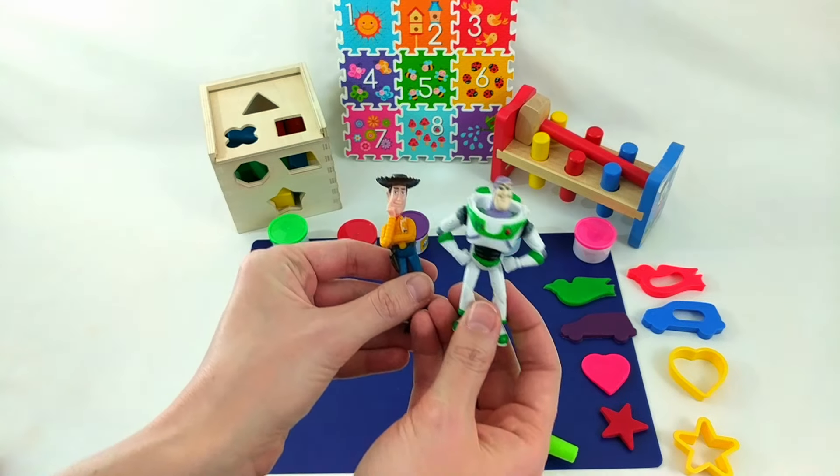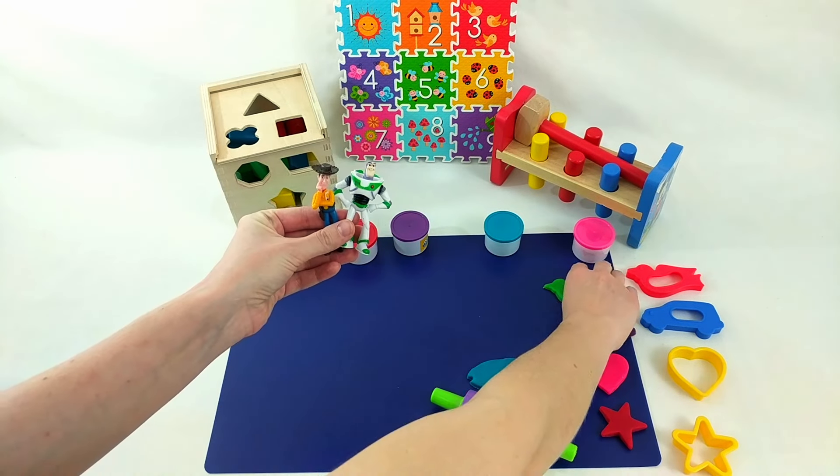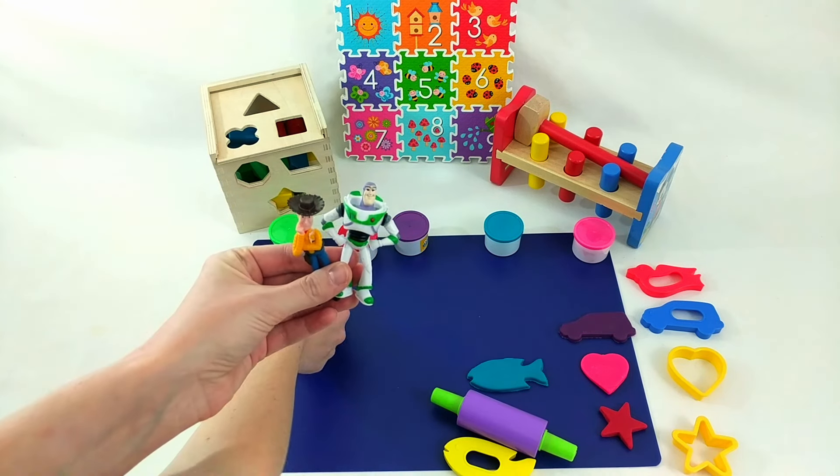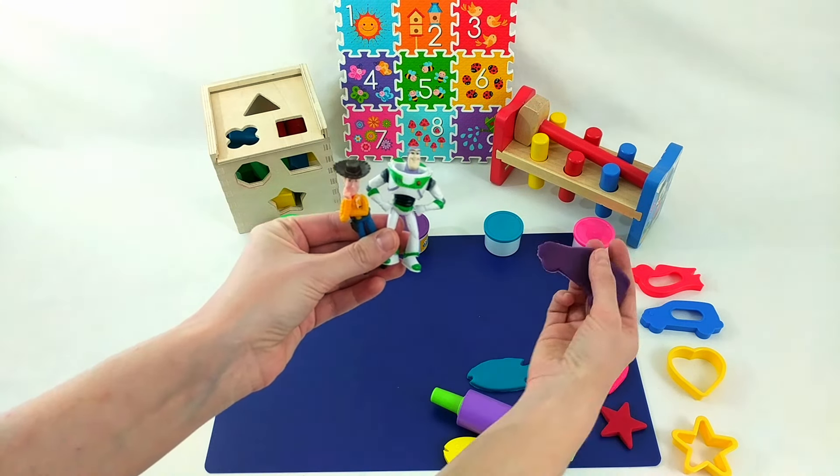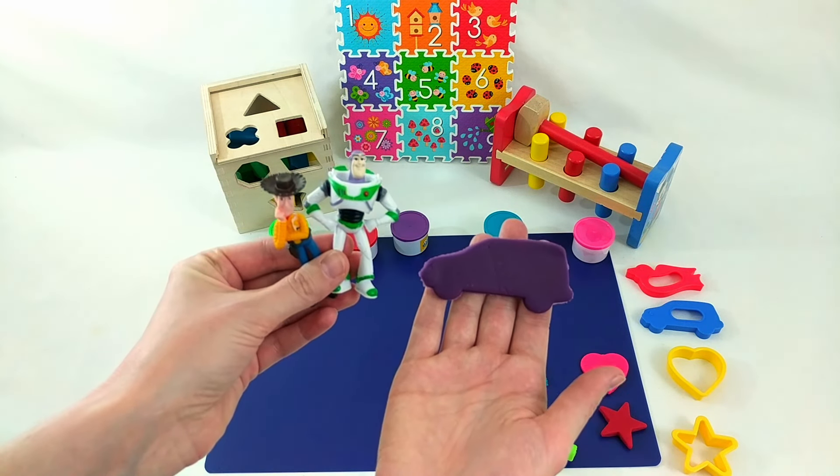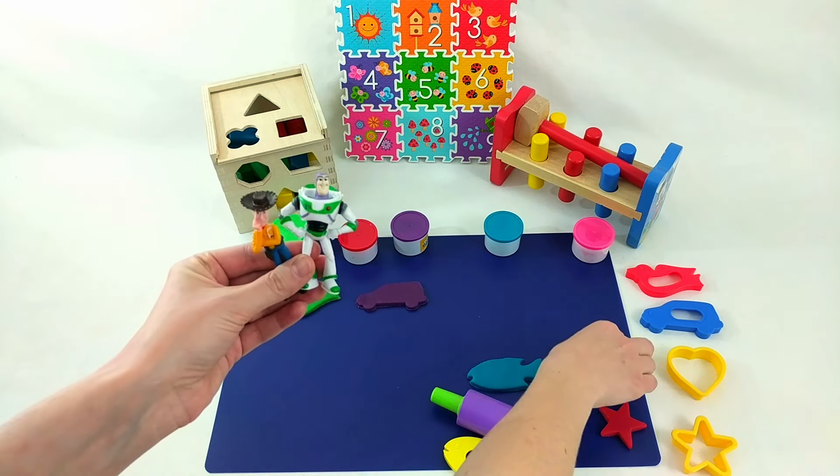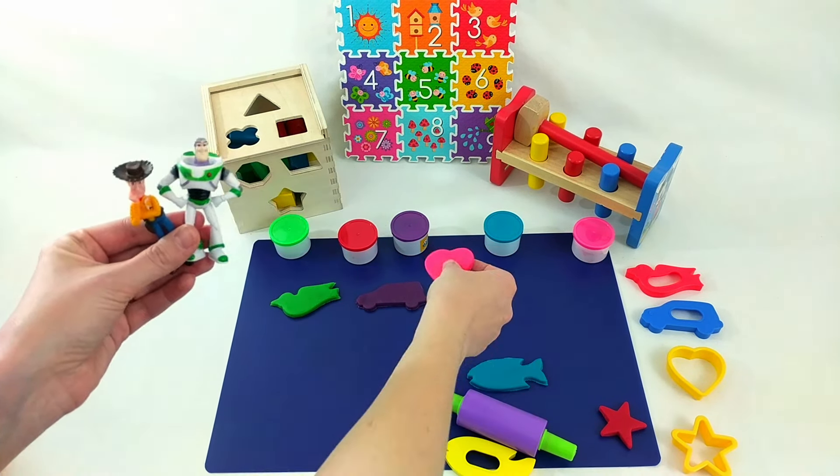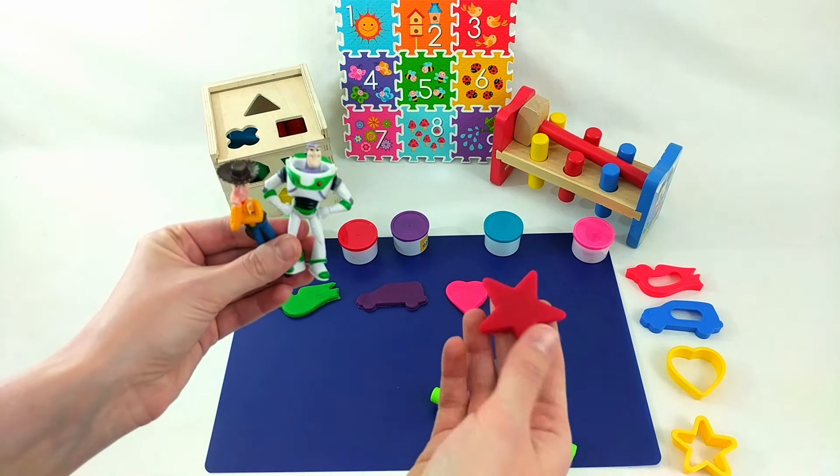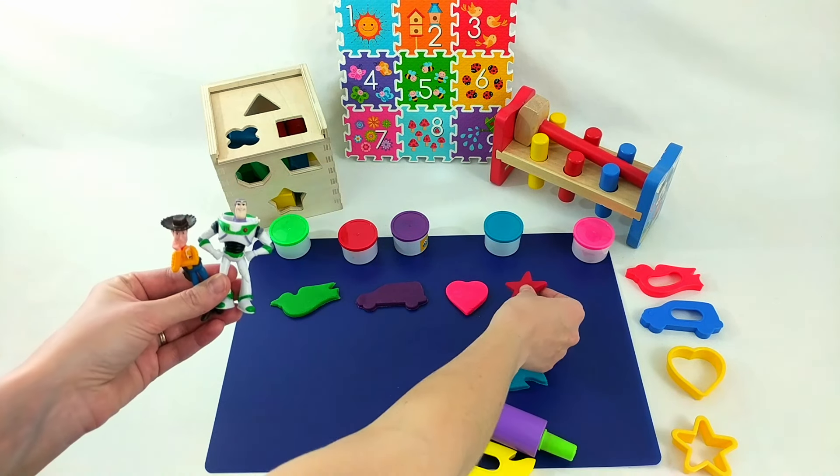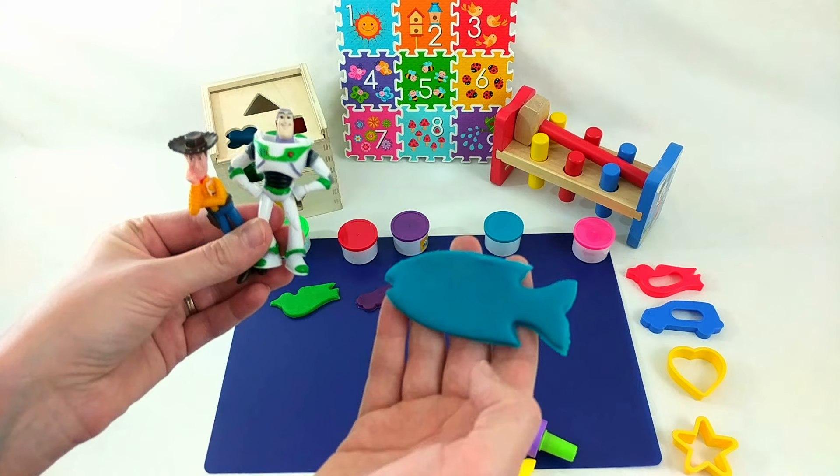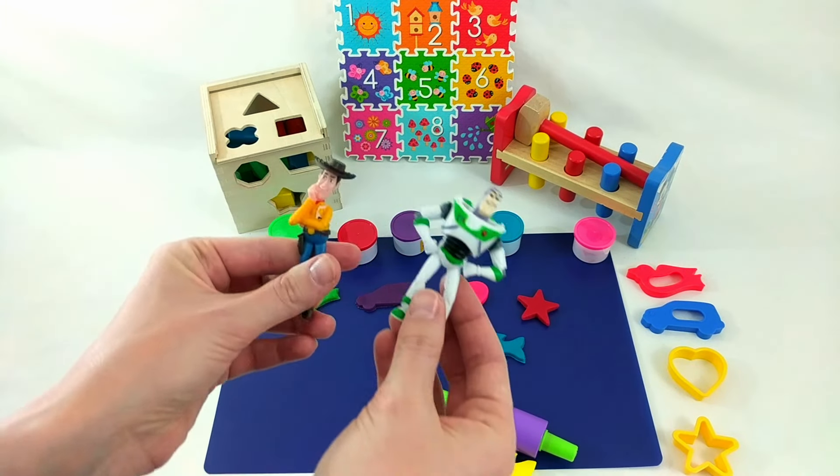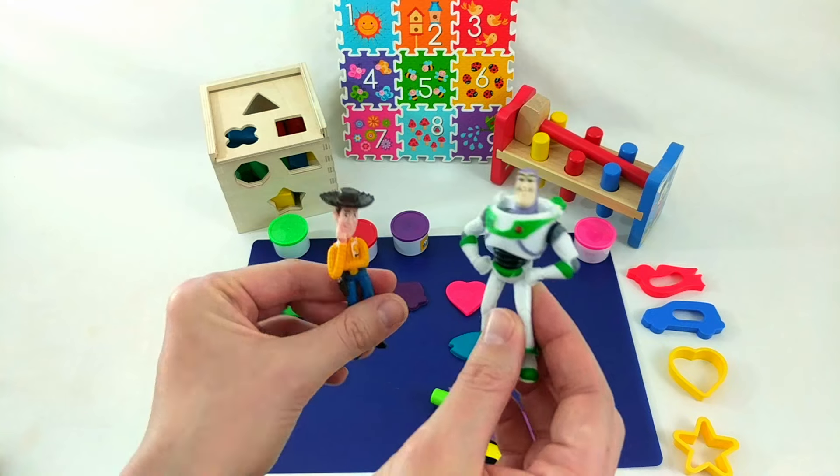Okay, let's clean up the extra Play-Doh. Thanks, Buzz and Woody. Let's see what we have. We have a green bird. A purple car. A pink heart. A red star. And a blue fish. Great job. See you next time.